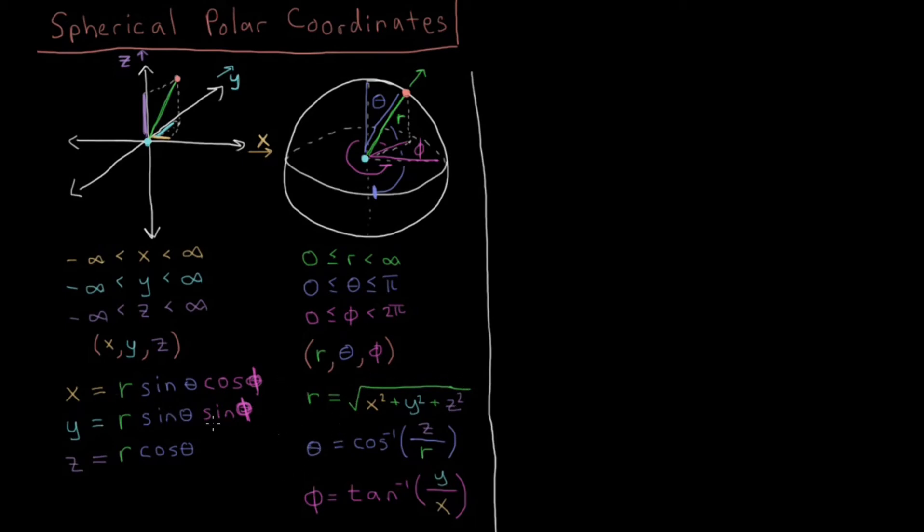And similarly, if you derive through all these relations, you'll arrive at the two final identities I have here. That theta equals the arc cosine of z over r, where r is defined in terms of these three Cartesian coordinates. And phi is equal to the arc tangent of y over x. That's similar to just the 2D polar coordinate system.